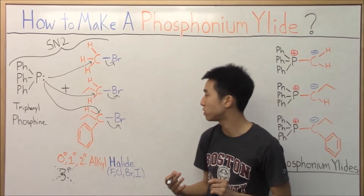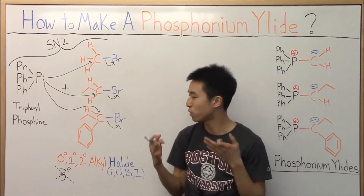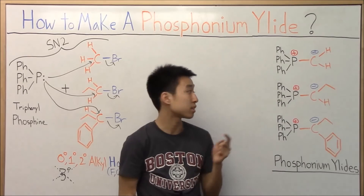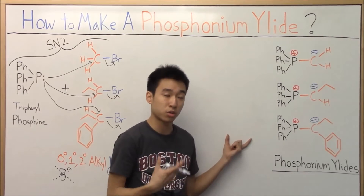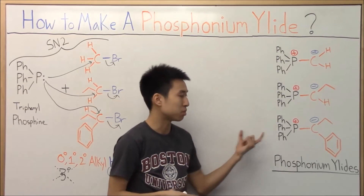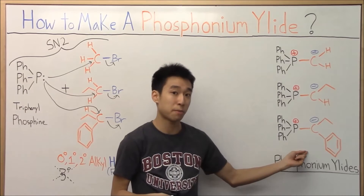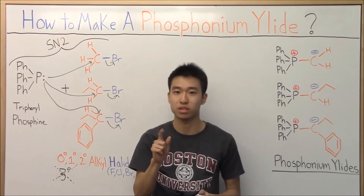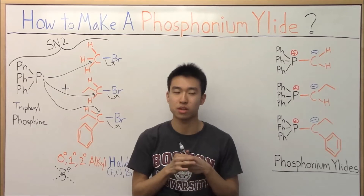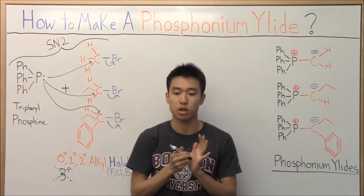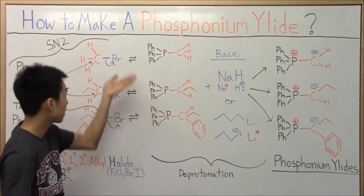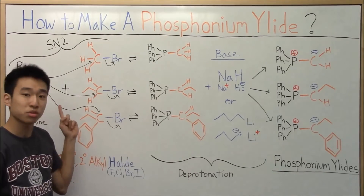I want you guys to hit pause one more time. Give me the products from here, and also guess what other reagent we need in the second step to actually produce a phosphonium ylid. Hit pause in three, two, one. Hopefully you guys paused — otherwise this is a little awkward. This is the product we get from our previous SN2 reaction. The carbon chains are stuck on, and our molecules look very similar to our phosphonium ylids — they're so close.